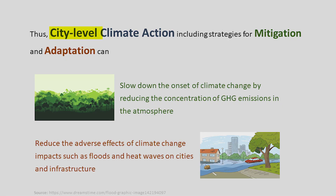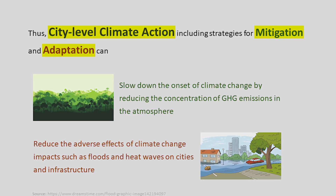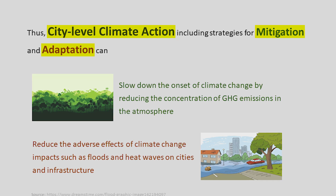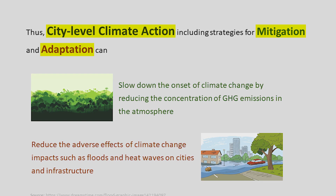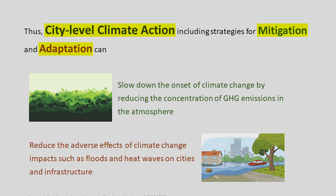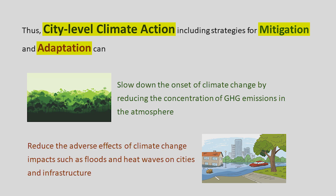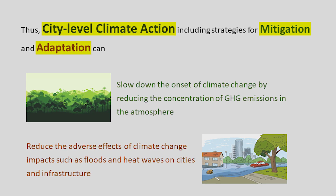What kind of adaptation is developed depends on the risks a city is likely to experience, as different locations within a city may face different kinds of risks. City-level climate action — including strategies for mitigation and adaptation — can slow down the onset of climate change and reduce its adverse effects on cities and infrastructure. Moreover, these strategies also reap numerous long-term co-benefits such as improvements in public health, reduction in household energy usage and costs, and increased longevity of urban infrastructure systems.